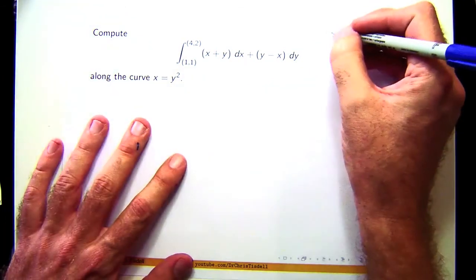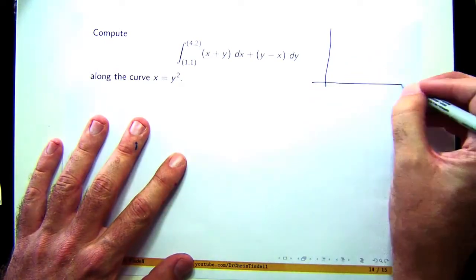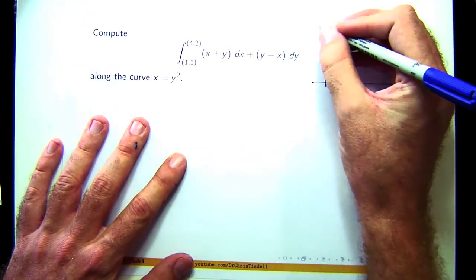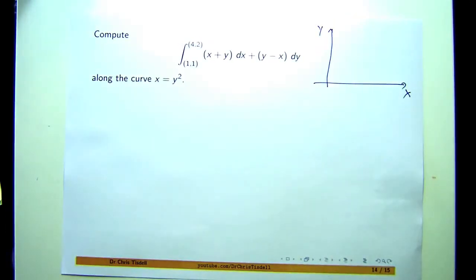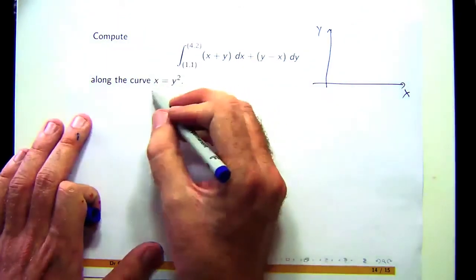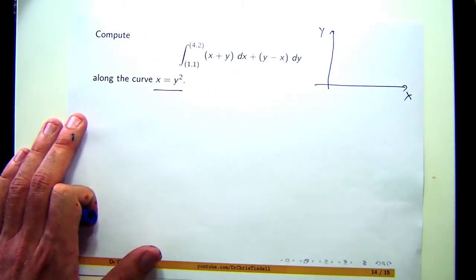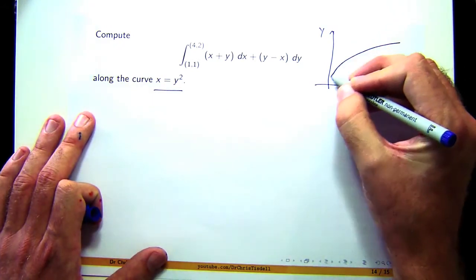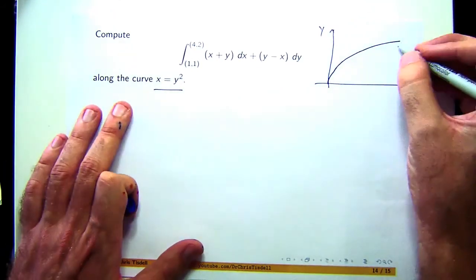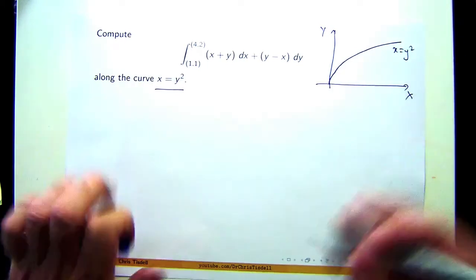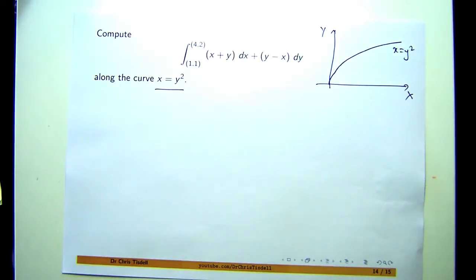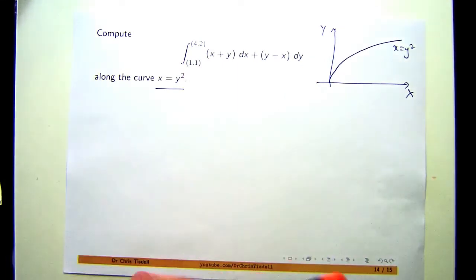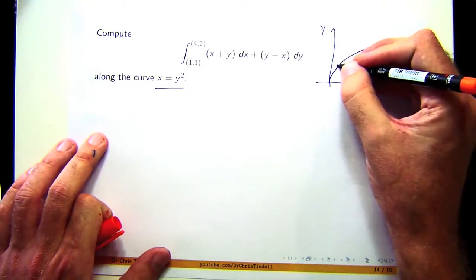So let's just draw a quick curve. With these kind of problems, it's always good to draw a curve. Now, x equals y squared. That's basically a parabola that's going to be on its side. And we want to go to the point 1, 1. Let's say it's there.